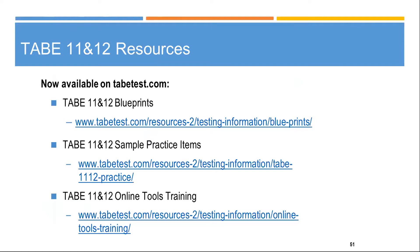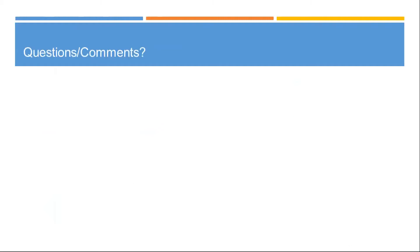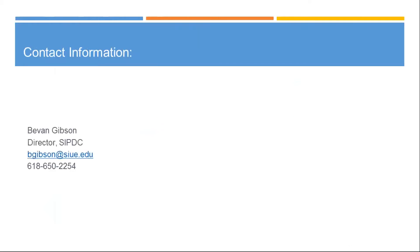A participant asked if the PowerPoint is available for download. It is — the archived webinar and presentation will be posted on lniworknet.com. Go to the footer where it says partner resources, select the tile for youth career pathways, and you'll find partner training materials including this webinar and presentation.